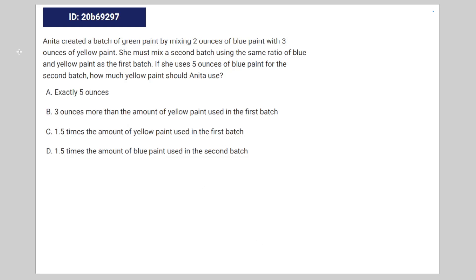We're given the following math problem. Anita created a batch of green paint by mixing 2 ounces of blue paint with 3 ounces of yellow paint. She must mix the second batch using the same ratio of blue paint and yellow paint as the first batch. If she uses 5 ounces of blue paint for the second batch, how much yellow paint should Anita use?